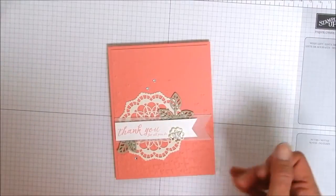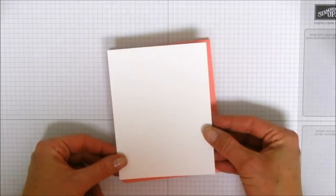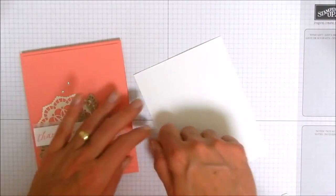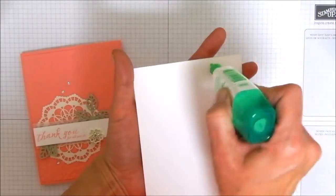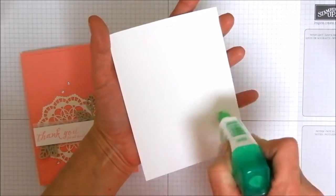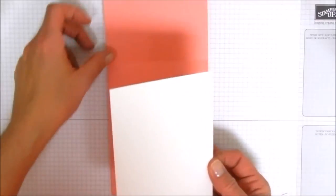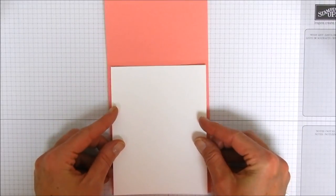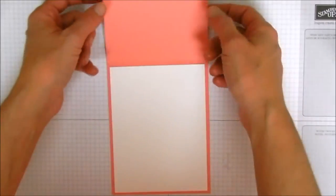And then we're just going to take our whisper white piece and center this up on the inside of the card. This is just going to be blank on the inside, you can of course decorate it if you'd like to, and lay that down so we have a nice panel for writing and our card is now complete.